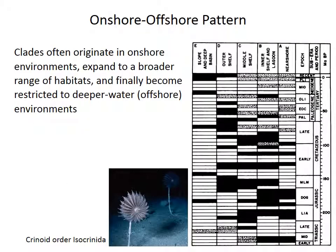Let's use the distribution of a crinoid group called Isocrinida as an example. The chart on the right is called a time-environment diagram. It shows time as the vertical axis — from the beginning of the Triassic at the bottom to the present day at the top — and the onshore to offshore environmental spectrum as the horizontal axis, from the shallowest water near shore on the right to the deeper water slope and basin on the left. Time-environment combinations that contain fossils of these crinoids are shaded in black, and white boxes have no data. Dotted boxes indicate crinoids probably weren't present, since other fossils are known from those combinations but crinoids have never been found.